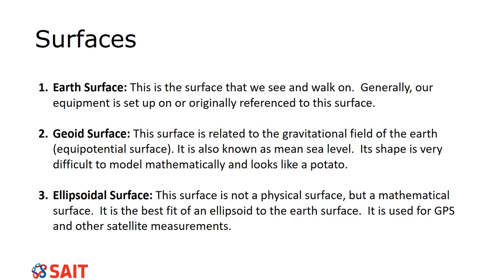That is Objective 7.2 — these are the three surfaces. Please make sure you know them well and how they're related: the geoid to the Earth's surface is orthometric height, the ellipsoid to the surface is ellipsoidal height, and the difference between the ellipsoid and the geoid is the geoidal undulation or geoid height. We'll be moving into 7.3 in the next video.